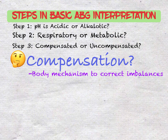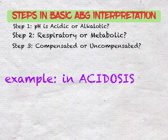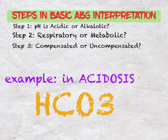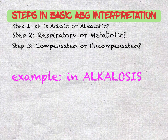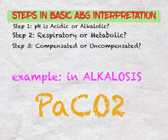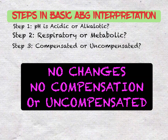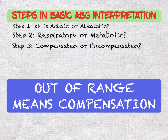How do you determine if an ABG is compensated or uncompensated? In acidosis, to know if the body is compensating, you examine the value of bicarbonate; in alkalosis, you look at the level of PaCO2. If the other value is still within normal ranges, there is no compensation occurring — the body has yet to fix or has been unable to fix the problem. However, if that value has become deranged, then the body is trying to fix the problem, meaning compensation is occurring.